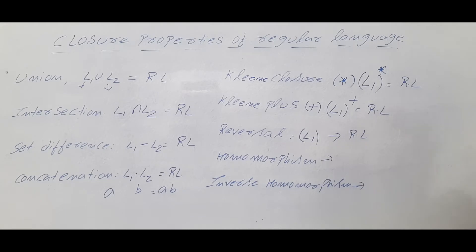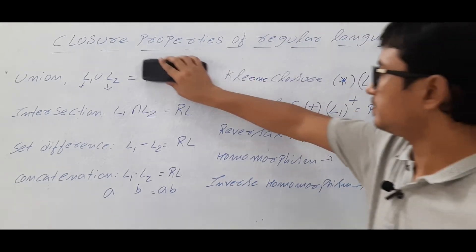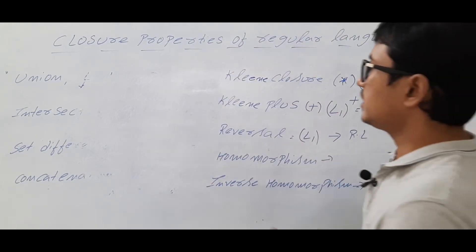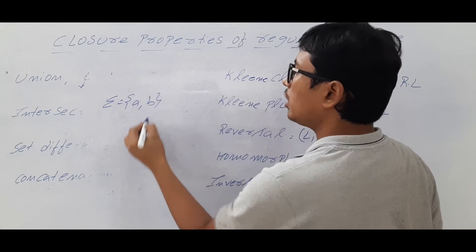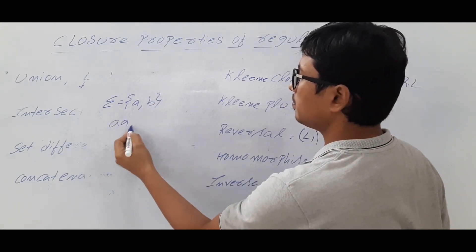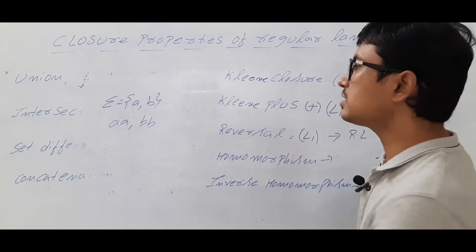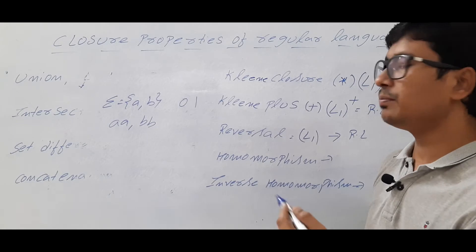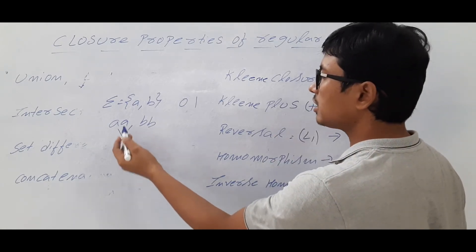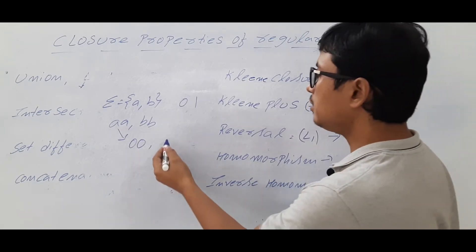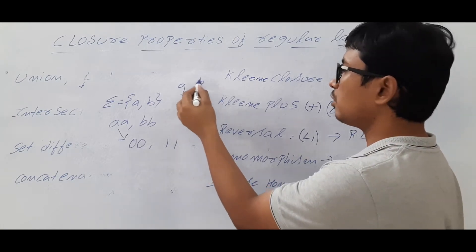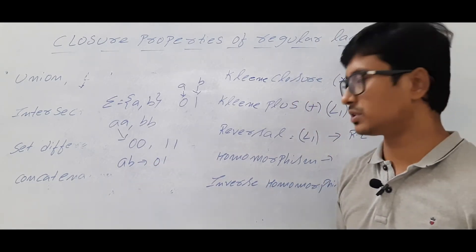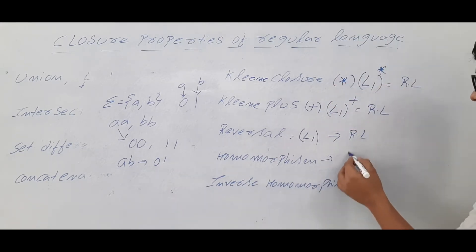Now coming to homomorphism and inverse homomorphism. Let me discuss what homomorphism means. Say the alphabets are {a, b} and you want to substitute: in place of 'a' you substitute zero, in place of 'b' you substitute one — it's like an encoding. So the homomorphism of string 'aa' will be '00', and 'bb' will be '11' because 'a' is encoded as zero and 'b' as one. Similarly, string 'ab' under homomorphism becomes '01'. So it is just like a substitution.